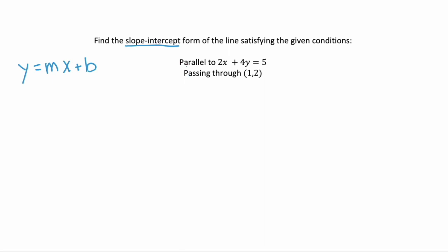The key things here are parallel. Parallel means they have to have the same slope. And once we have that slope, we can find the intercept. So to find the slope, we need to take our given equation 2x plus 4y equals 5, and rewrite it in that slope intercept form.